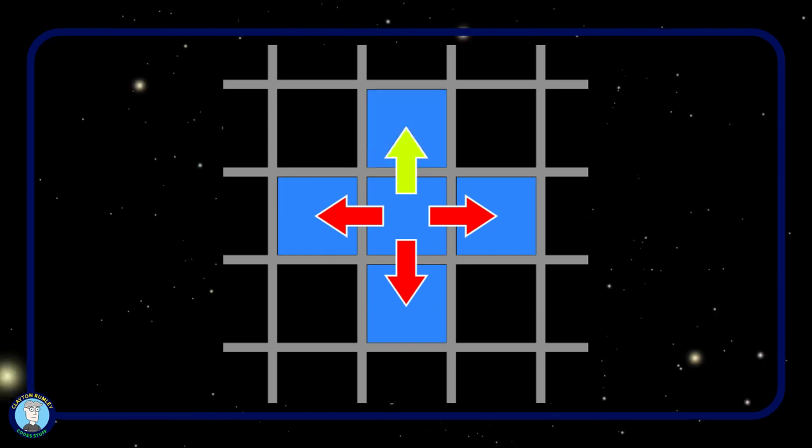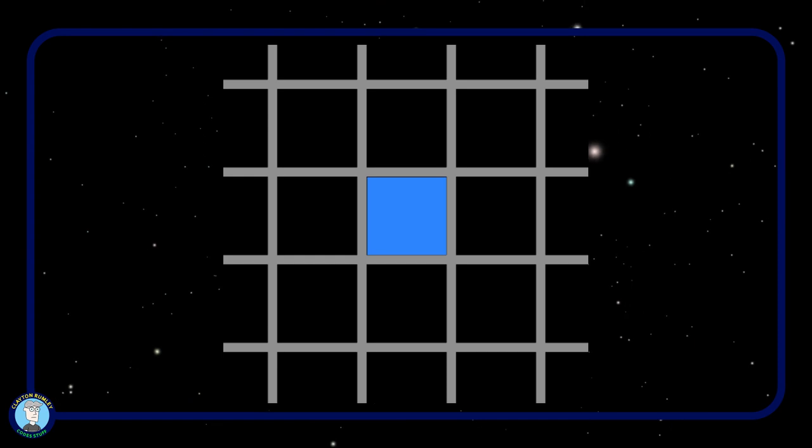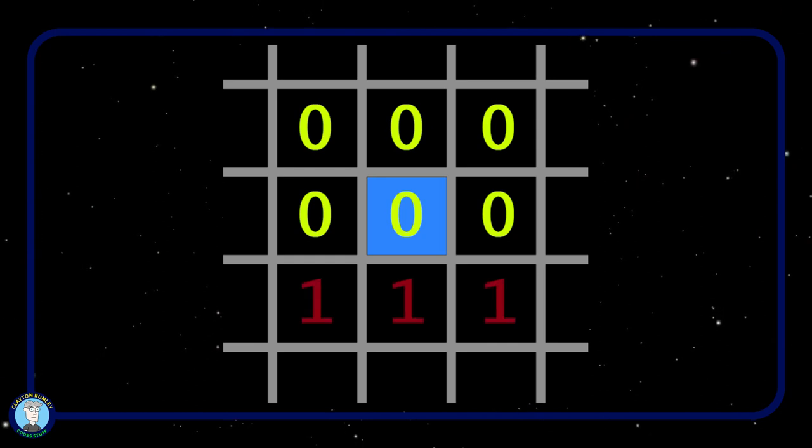I'm ready to start simulating water, but there's one thing I'm missing. Boundaries that prevent the water from flowing outside its grid. To solve this, I added a simple integer type field to my water cell. Zero for a regular cell, and one for boundaries.